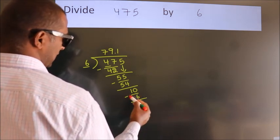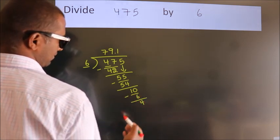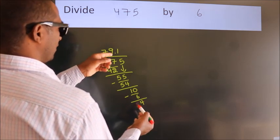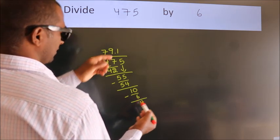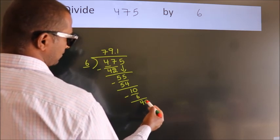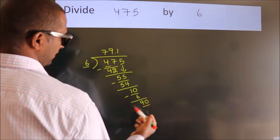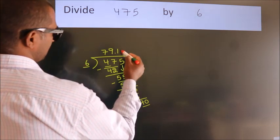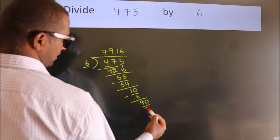Now we subtract. We get 4. After this, we already have the decimal, so directly take 0. So 40. A number close to 40 in the 6 table is 6 times 6, which is 36.